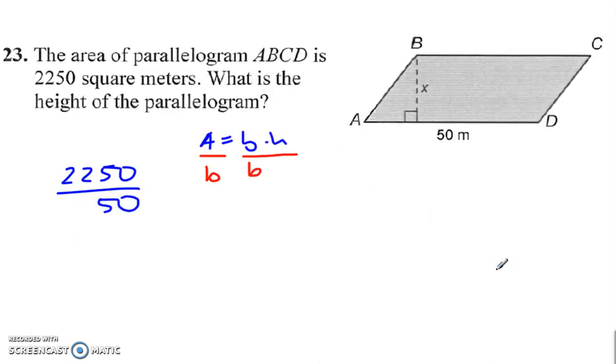Here we have, we know the area, we know the base, we want to find the height, so we just have to divide the area by the base, and area divided by base, 22.50 divided by 50 is 45.